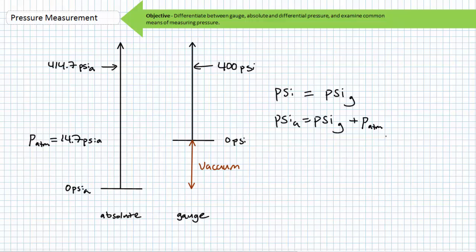In summary, absolute pressure is zero referenced against a perfect vacuum. An absolute pressure reading is therefore equal to gauge pressure plus atmospheric pressure. In contrast, gauge pressure is zero referenced against ambient air pressure. A gauge pressure reading is equal to absolute pressure minus atmospheric pressure.